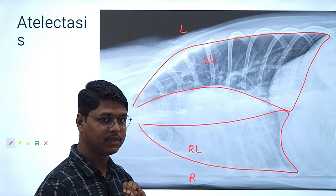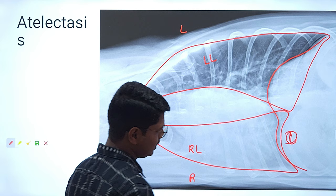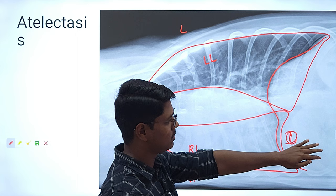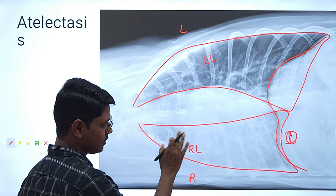Why is it collapsed? Because of three reasons. First, see the diaphragm. This diaphragm puts pressure on this dependent lung — the lung which is towards the table is known as the dependent lung. All the abdominal viscera will be towards the dependent side. They will put pressure on the diaphragm, and in turn, the diaphragm will put pressure on the dependent lung, in this case the right lung, causing it to collapse. This is the first reason.